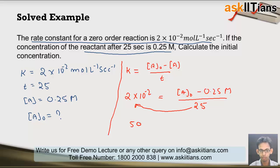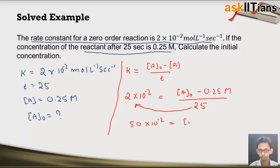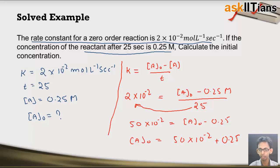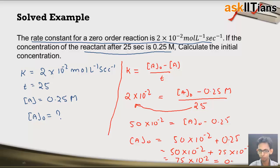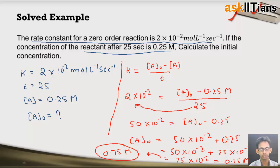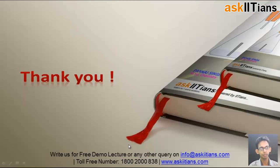Substituting: 2×10⁻² multiplied by 25 equals A₀ minus 0.25, giving 50×10⁻² equals A₀ minus 0.25. Rearranging: A₀ equals 50×10⁻² plus 0.25, which is 50×10⁻² plus 25×10⁻², giving 75×10⁻² or 0.75 mol per liter. So the initial concentration is 0.75 M. This was a simple solved example based on zero order reaction.